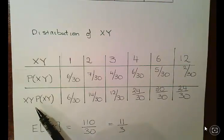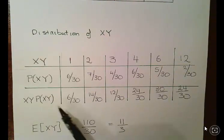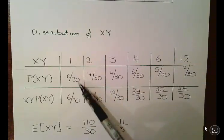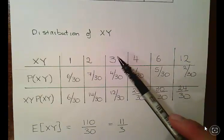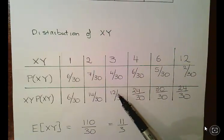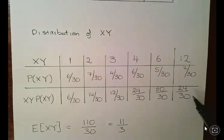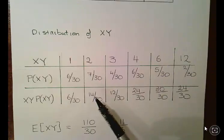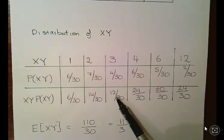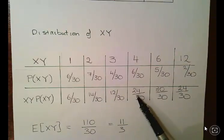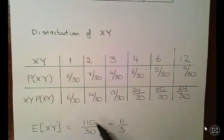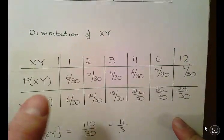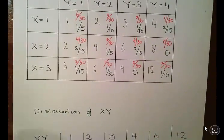We calculate the expected value of XY by multiplying each outcome by its probability and summing: 1×(6/30) = 6/30; 2×(7/30) = 14/30; 3×(4/30) = 12/30; 4×(6/30) = 24/30; 6×(5/30) = 30/30; 12×(2/30) = 24/30. Adding them up: 6+14+12+24+30+24 = 110 over 30, which equals 11 over 3. So that is the expected value of X times Y.